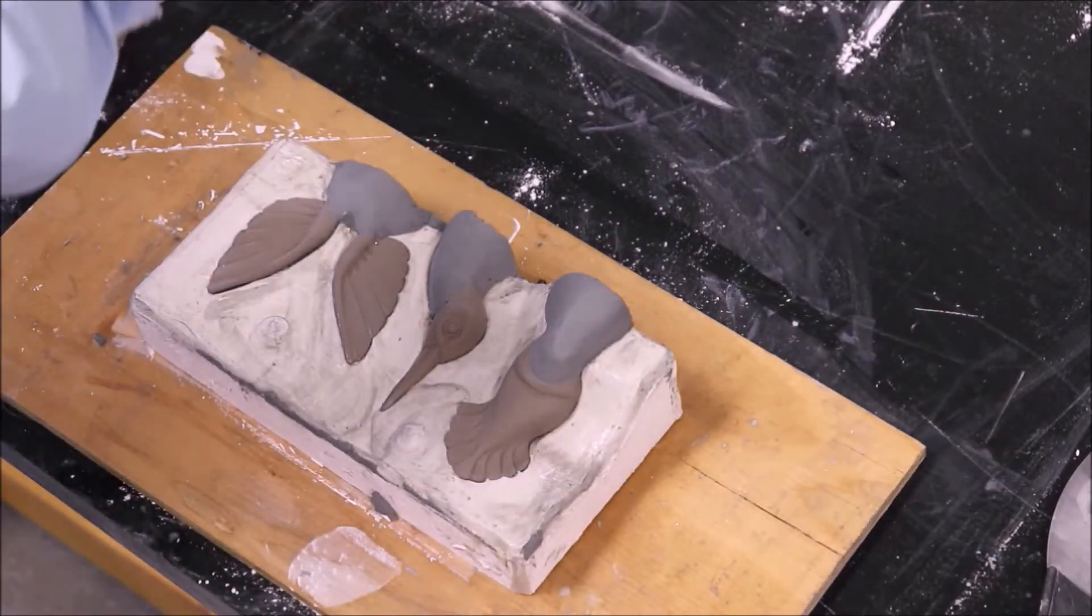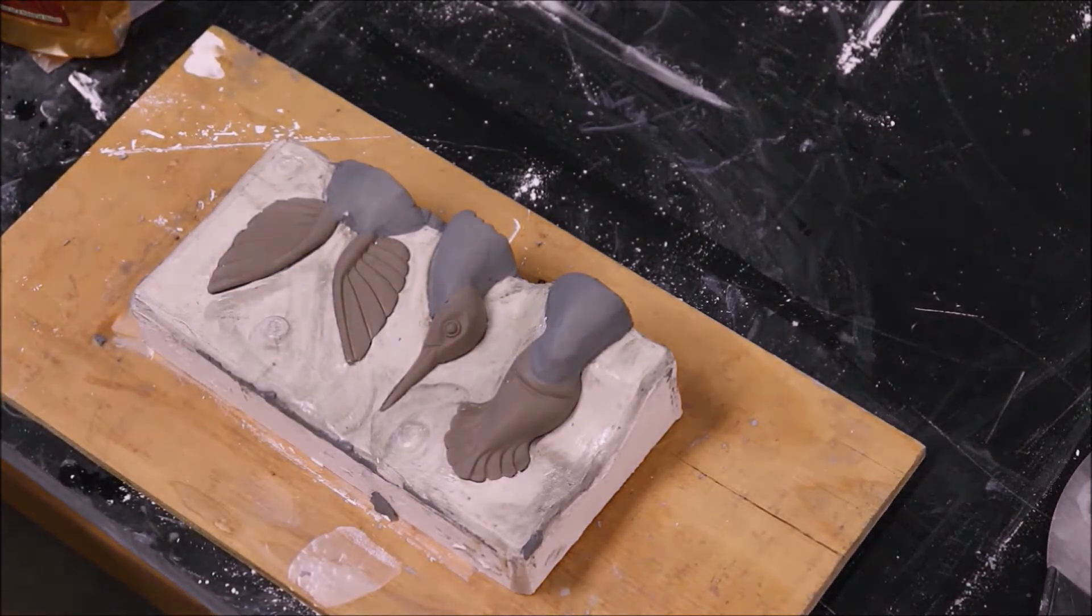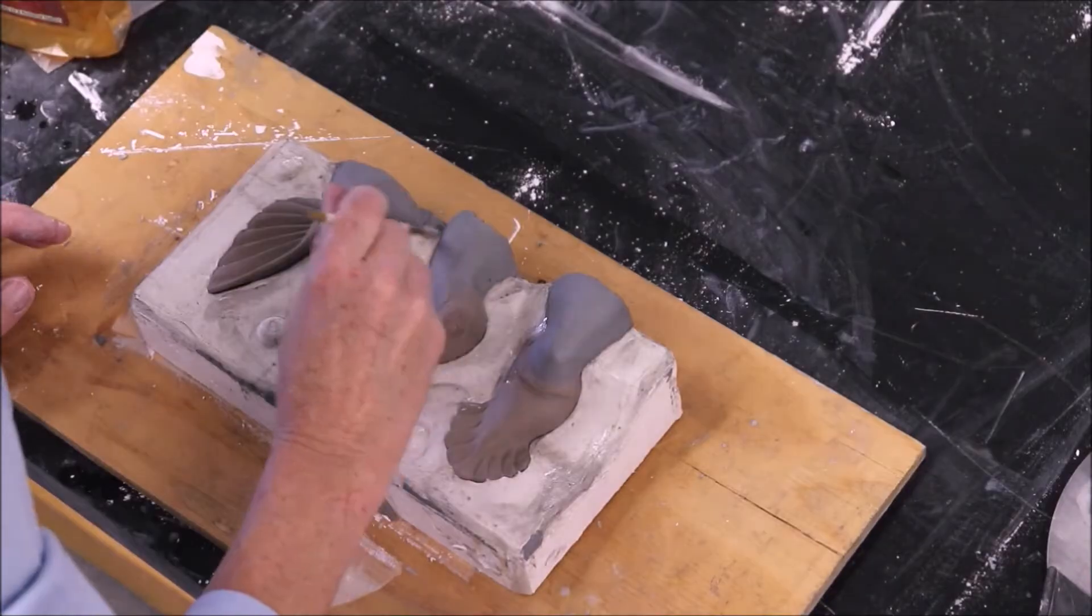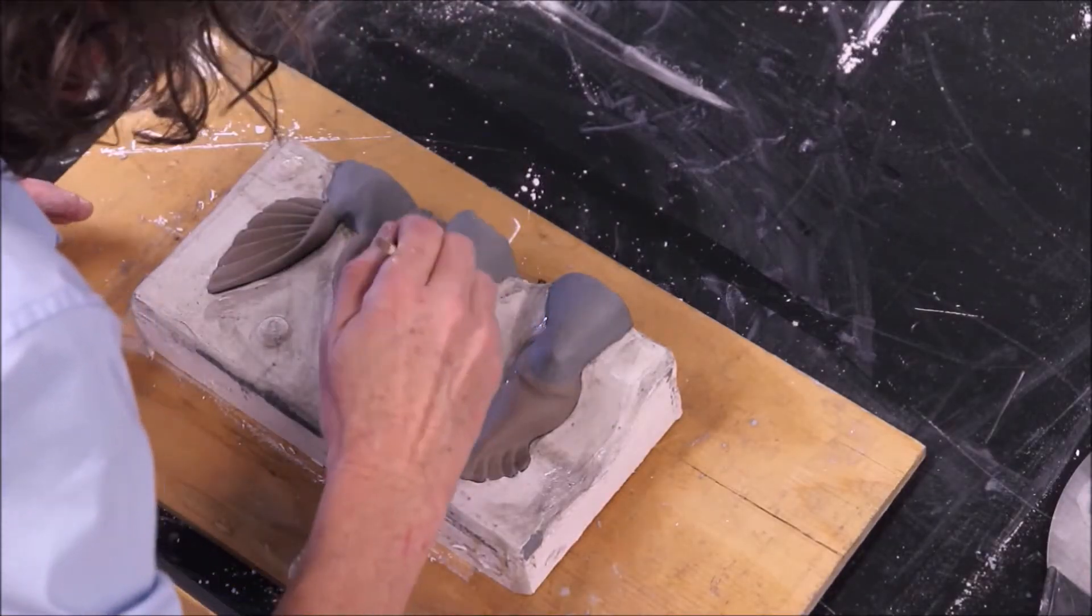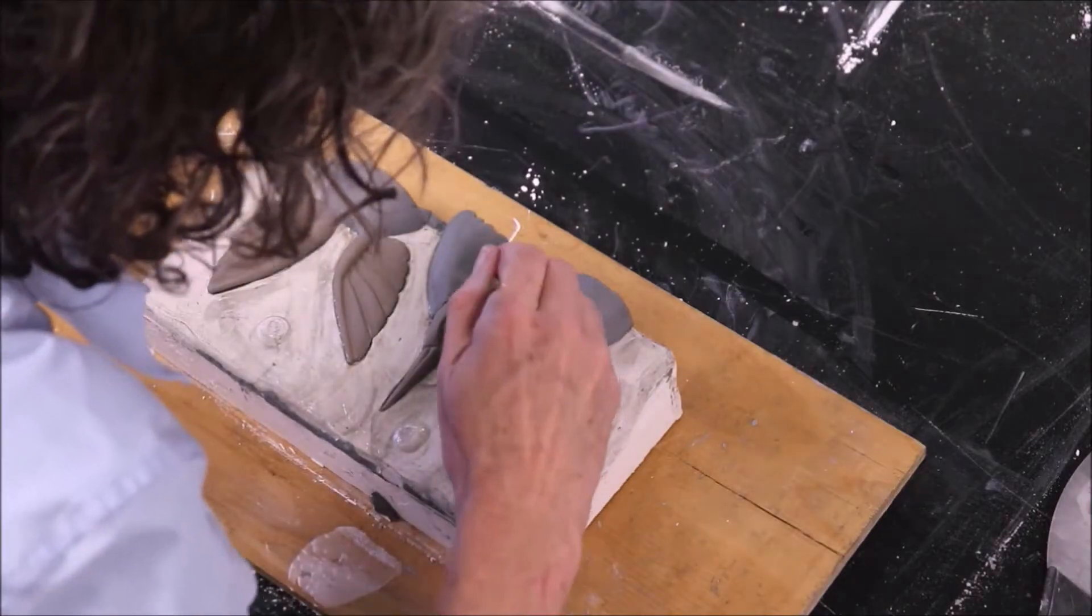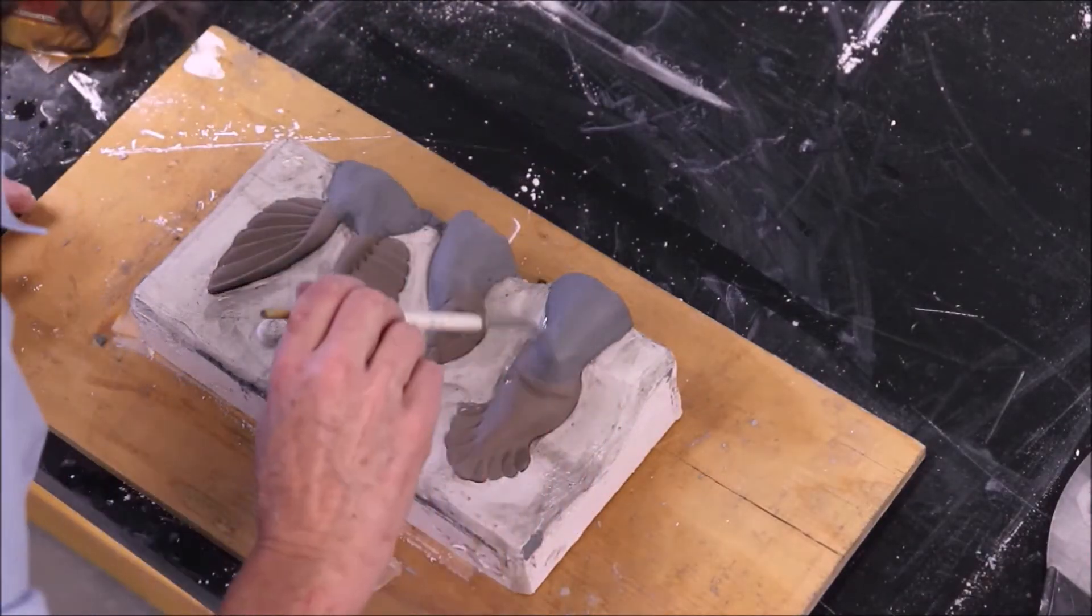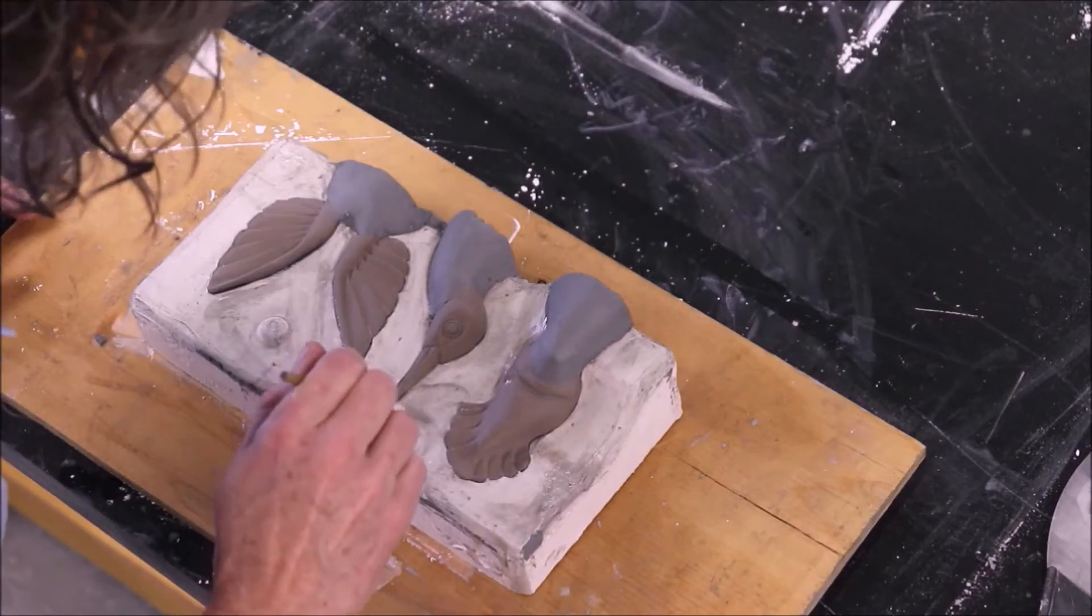You want good even coverage and you also don't want your Murphy oil soap to pool. If you create pools, just get rid of them. The reason you don't want to have pools of Murphy oil soap on your plaster bed is because the new plaster that you pour on top of that will try to combine with the oil soap, creating weak points.